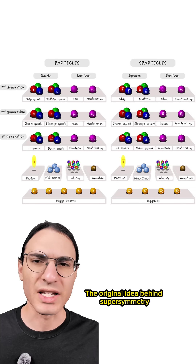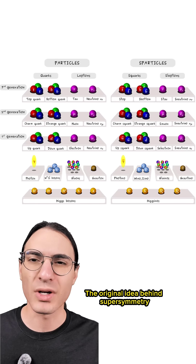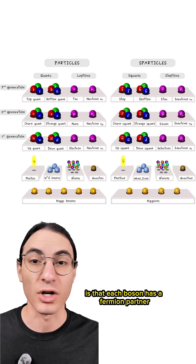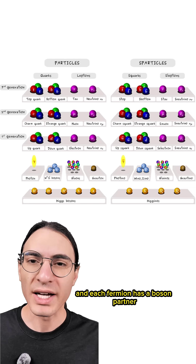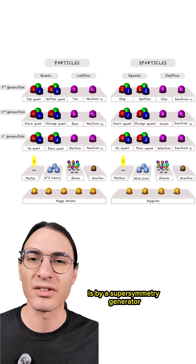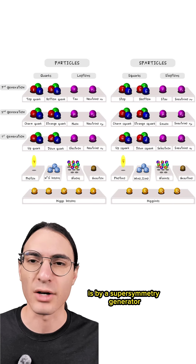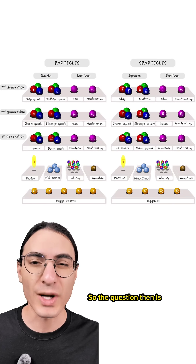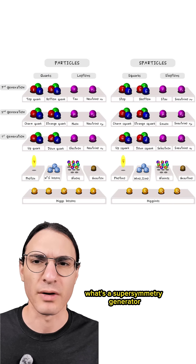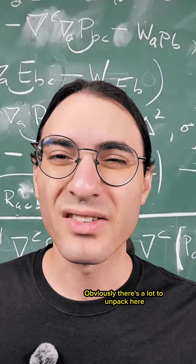The original idea behind supersymmetry is that each boson has a fermion partner, and each fermion has a boson partner. And the way these particles are related is by a supersymmetry generator. So the question then is, what's a supersymmetry generator?